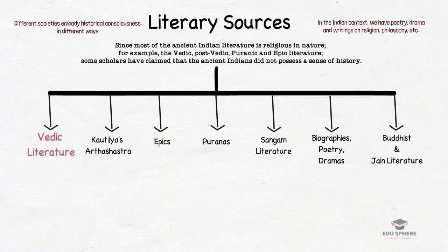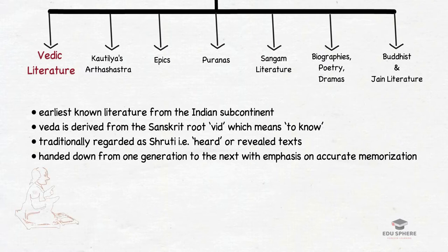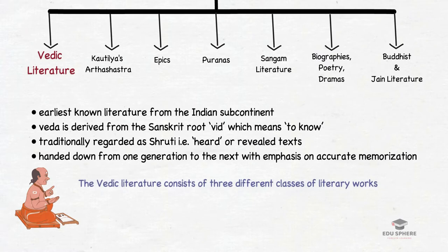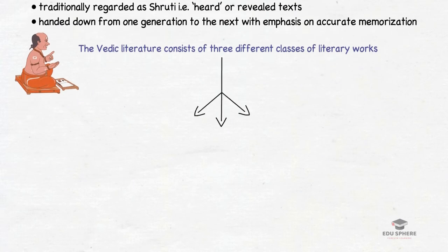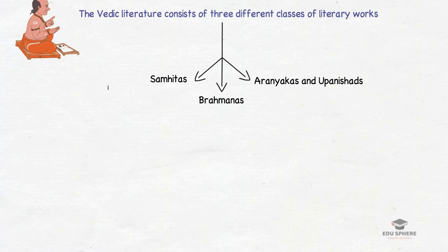First comes the Vedic literature — these are the earliest known literature. The word Veda is derived from the Sanskrit root 'vid' which means to know. The Vedas are said to have passed on through verbal transmission from one generation to the next, which is why they are also known as Sruti literature — heard or revealed texts. The Vedic literature consists of three classes of literary works: Samhithas, Brahmanas, Aranyakas and Upanishads. Some texts list four different classes, simply considering Aranyakas and Upanishads as two separate classes.